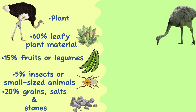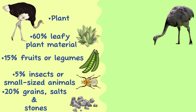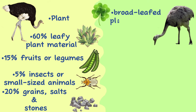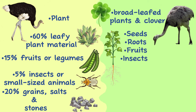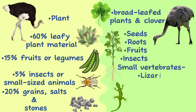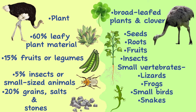Rheas are omnivorous, preferring broad-leafed plants and clover. However, they eat a variety of seeds, roots, fruits, insects and small vertebrates such as lizards, frogs, small birds, and snakes.